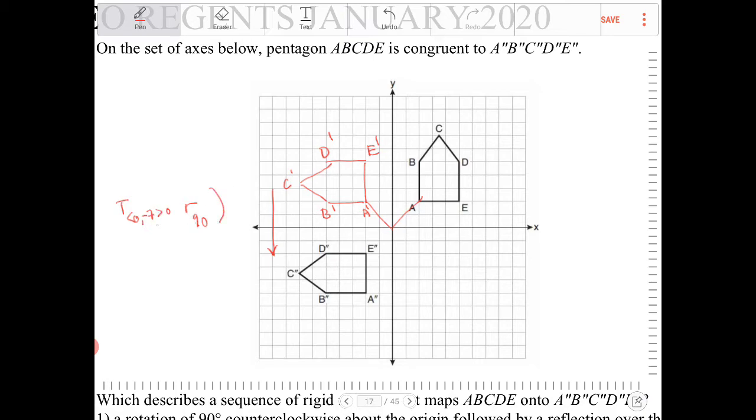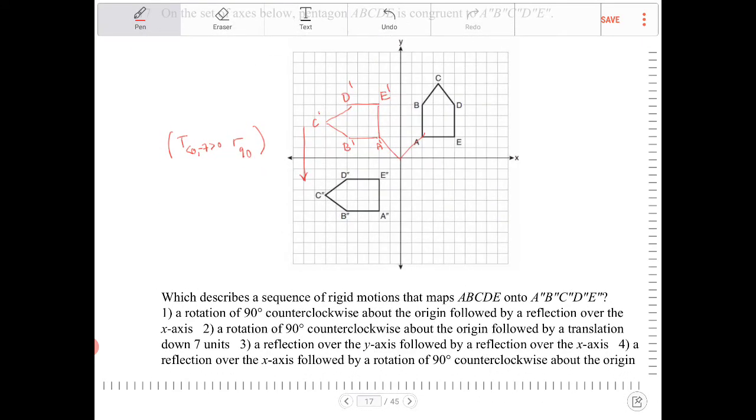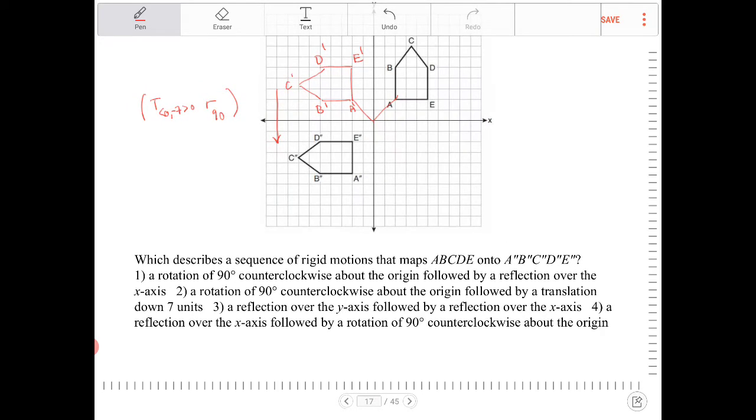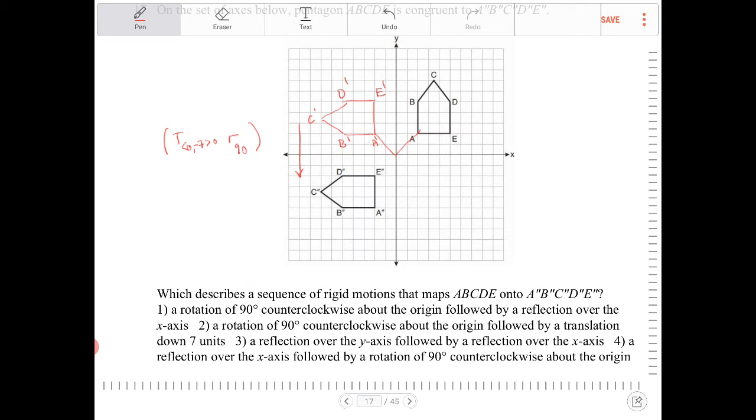So this would be the rule, and I'm guessing that's what the question is asking for us to fish for. So a rotation of 90 degrees counterclockwise, that's good, about the origin, followed by a reflection, that would not be true. Because if it was a reflection, then the order by which we're drawing A, B, C, D, E, if you notice, A, B, C, D,